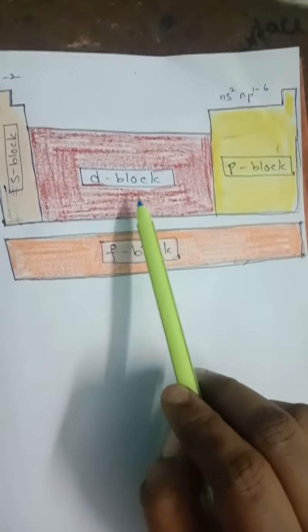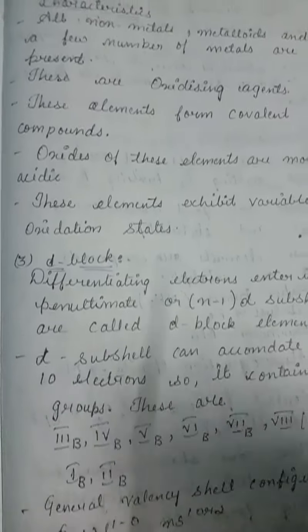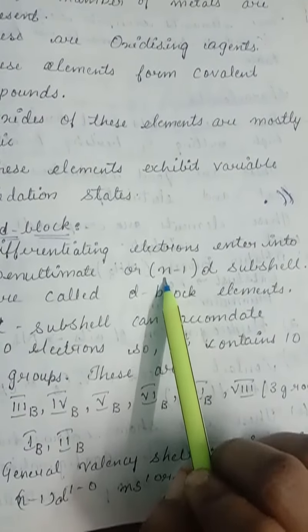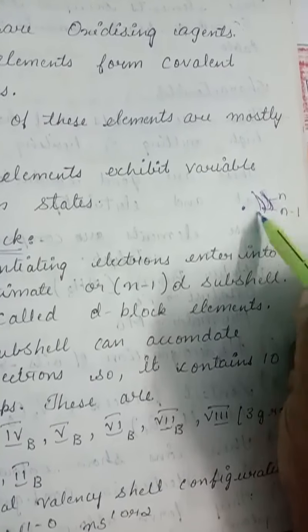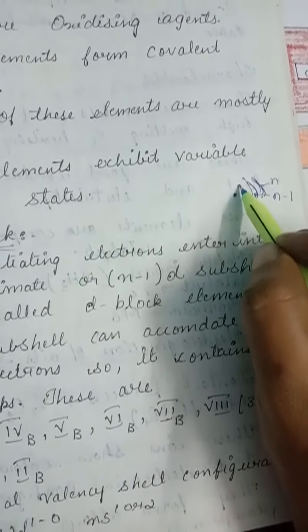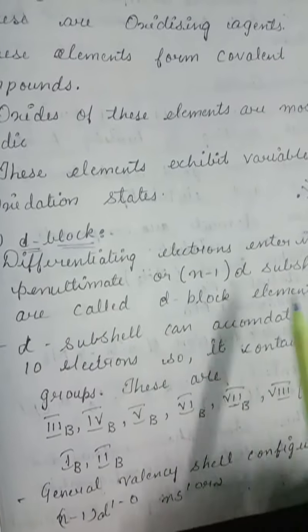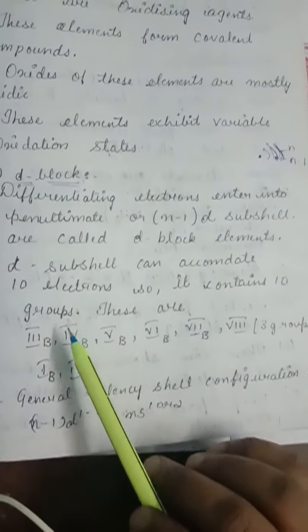D block elements are those in which the differentiating electron enters into the penultimate, or (n−1)d subshell. The outermost shell is the ultimate shell, the next inner shell is the penultimate shell, and the innermost is the anti-penultimate shell. D block can accommodate up to 10 electrons and contains 10 groups: 3B, 4B, 5B, 6B, 7B, 8B, and then 1B and 2B.